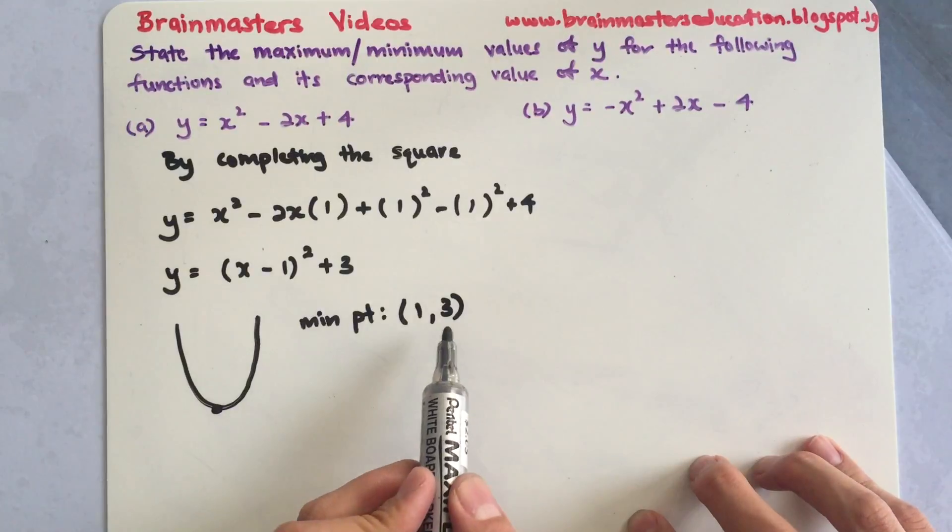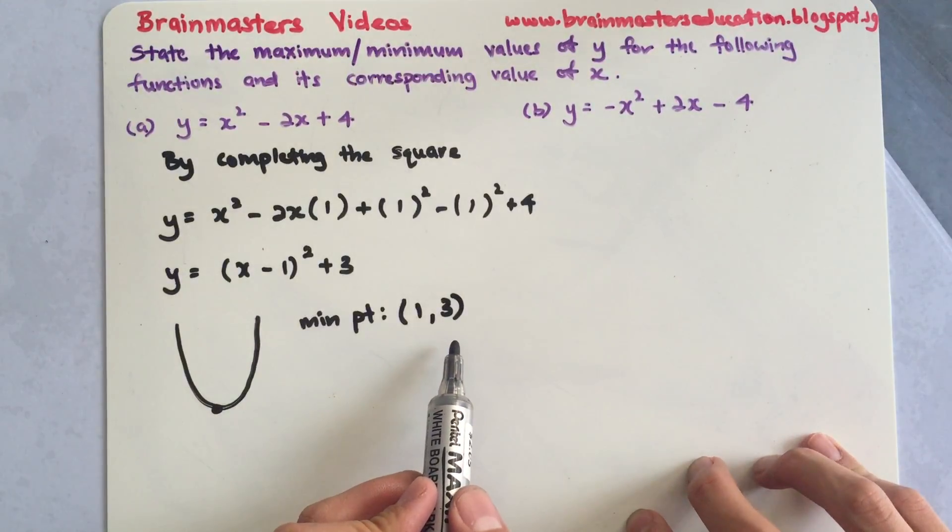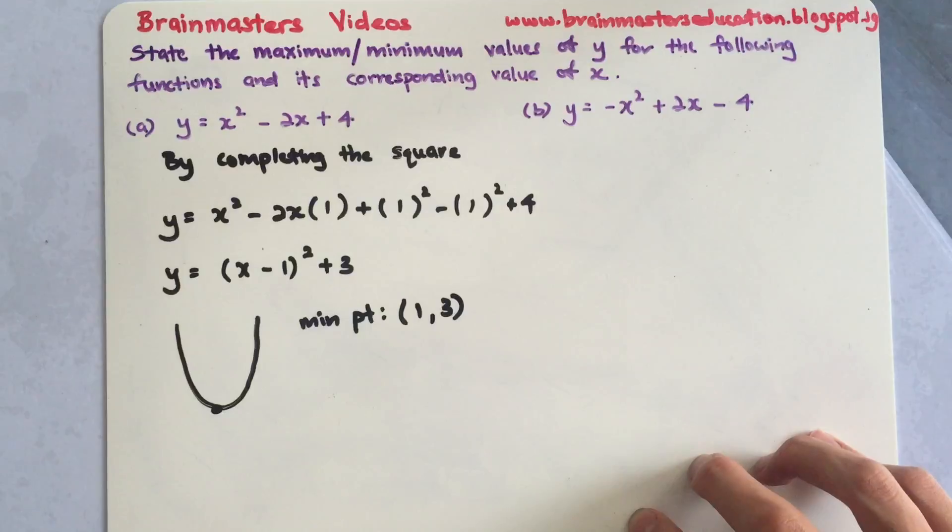The minimum value of y is 3 and the corresponding value of x is 1. This is how I get the maximum or the minimum.